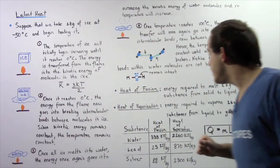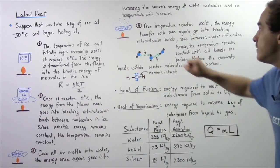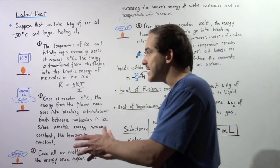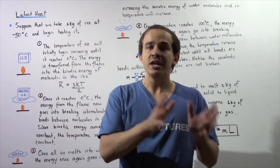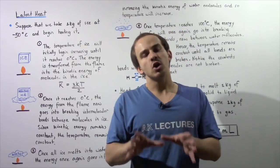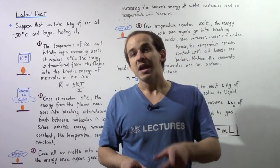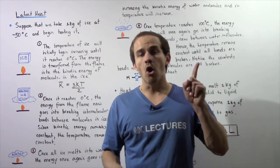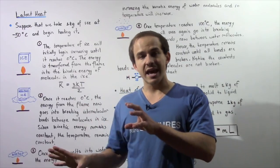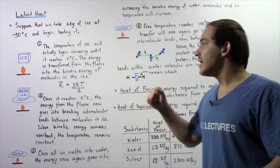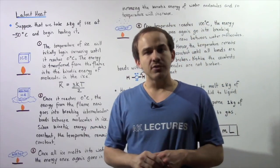If we're dealing with melting, we use the heat of fusion; if we're dealing with vaporization, we use the heat of vaporization. Notice that when we go from the solid state to the liquid state, or from the liquid state to the gas state, we have to input energy to break those intermolecular bonds. On the other hand, when we go from the gas state to the liquid state, or from the liquid state to the solid state, energy is released — intermolecular bonds are formed and that releases energy.